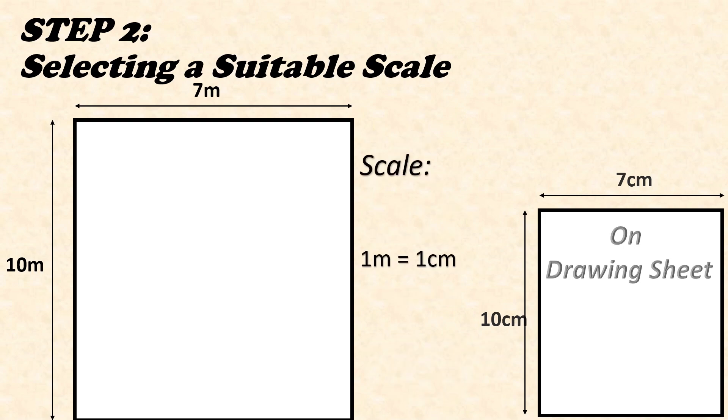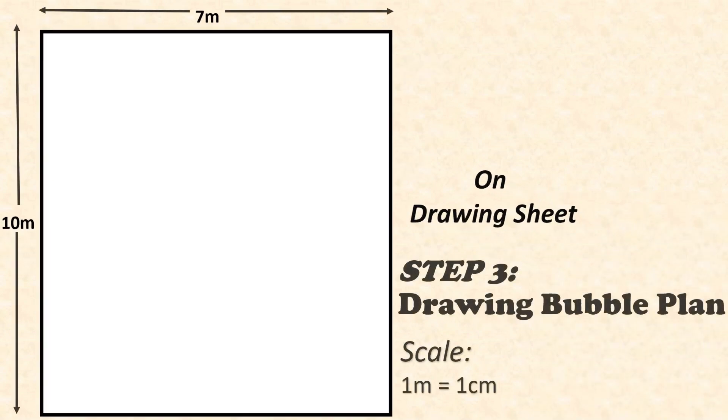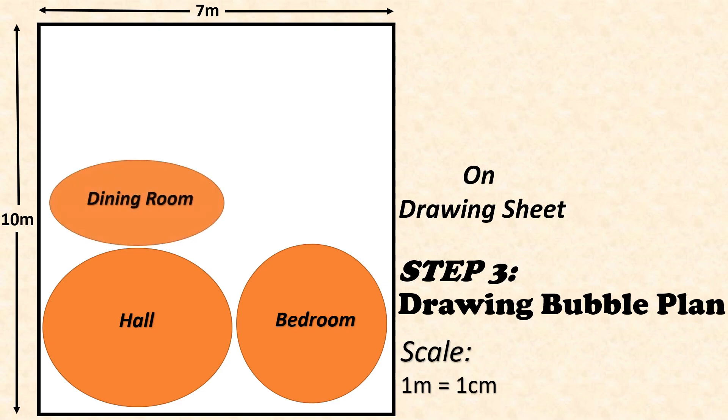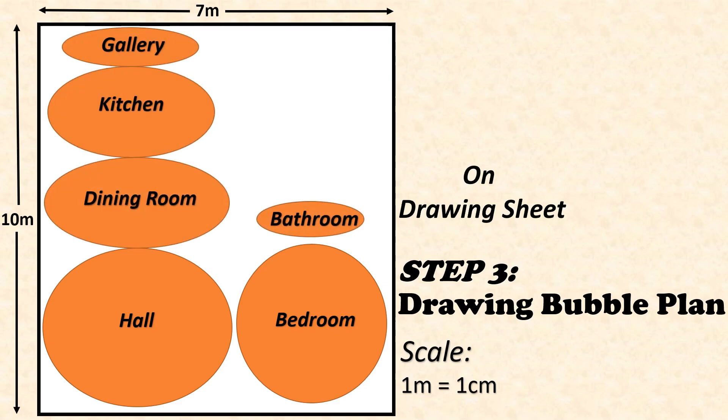Step number three is drawing the bubble plan. This is called our key plan. Arrangement of all the components will be decided in this step approximately in form of bubbles. Suppose you want your hall over here, one of the bedrooms over here, dining room here, then common bathroom this side, then kitchen and wash area or gallery over here, and other bedroom with attached bath in this way. This is our rough planning. Here we have still not shown all the rooms to scale, but alignments and arrangements have been decided.